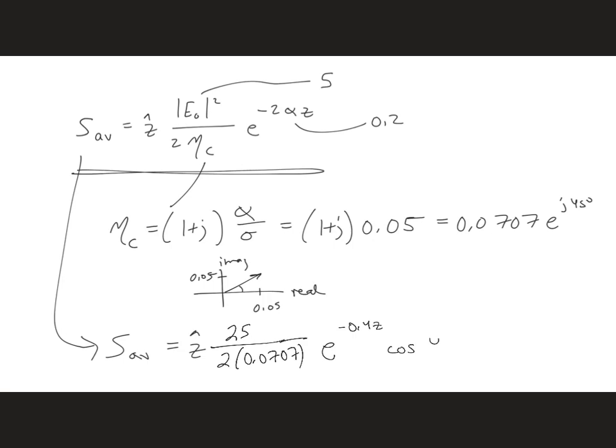And then we have cosine of 45 degrees, which we can evaluate. So in the end, we get z hat 125 times e to the minus 0.4z, meaning that the power density is also decaying with distance into the material.